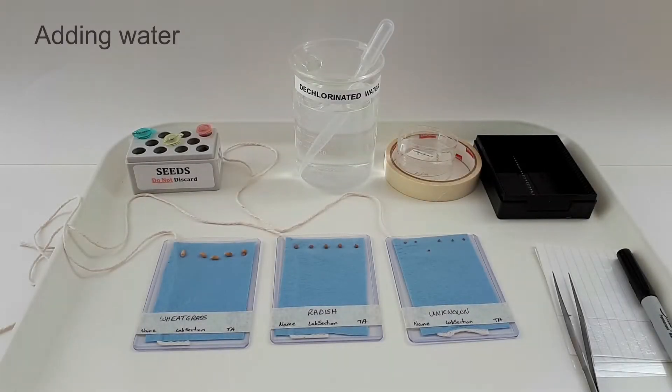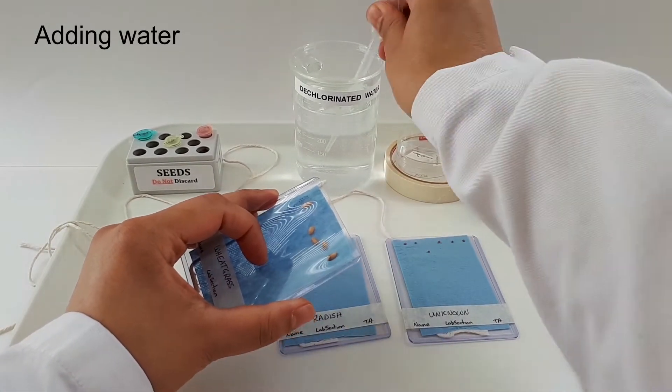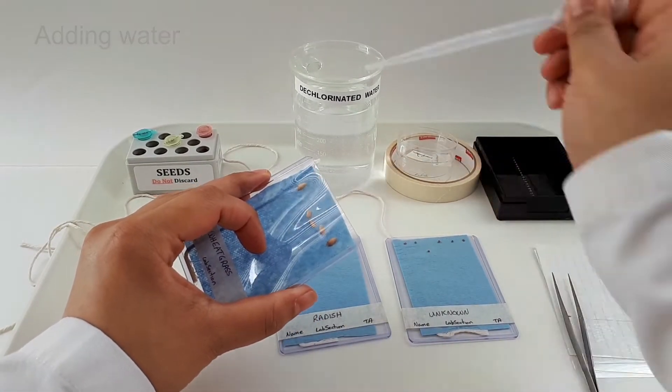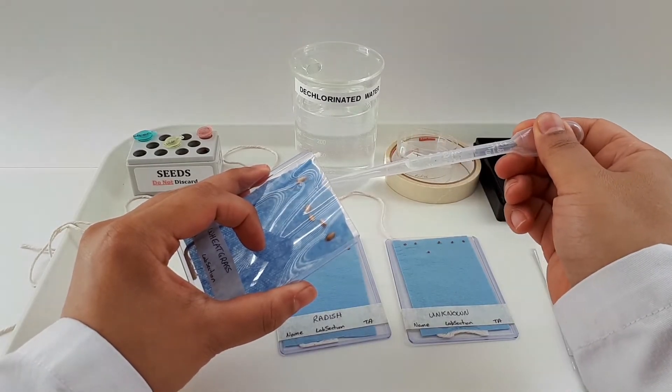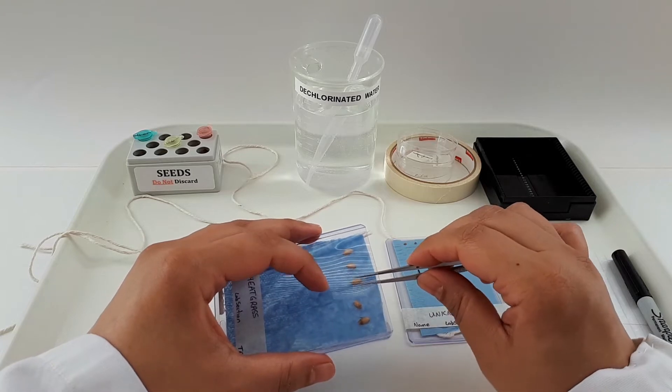Use a plastic pipette to add five to six milliliters of dechlorinated water to each pocket. If any of your seeds get displaced during this process, you can use the forceps to get them back into position.